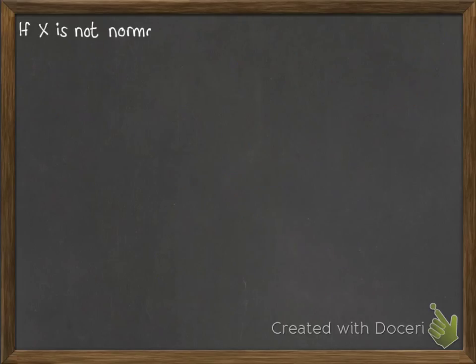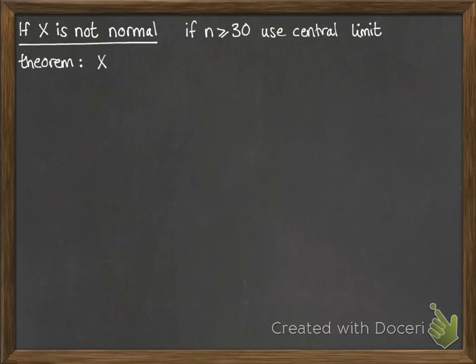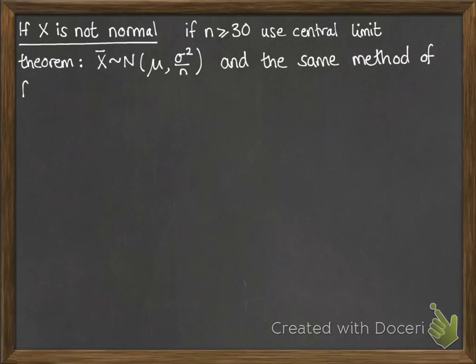What if X is not normal? If n is bigger than 30, if our sample size is bigger than 30, then we can use the central limit theorem. You've seen this already, and then we just continue as normal, the same as you've just seen.